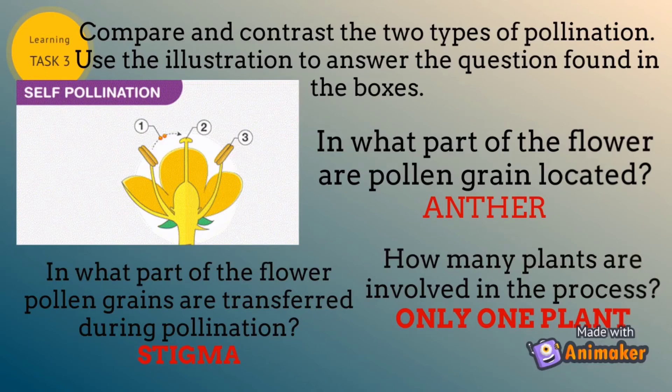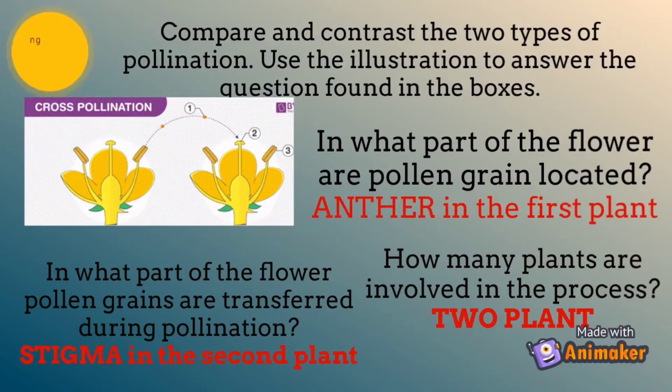In what part of the flower are pollen grains transferred during pollination? Answer: stigma. How many plants are involved in the process? Answer: only one plant is needed in the process.